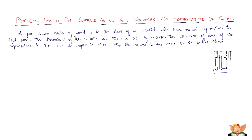It says that a pen stand made of wood is in the shape of a cuboid, with four conical depressions to hold the pens. These are the depressions that we're talking about, shown in green. So these are the depressions in the wood in which the pens stand — those are in the shape of a cone.